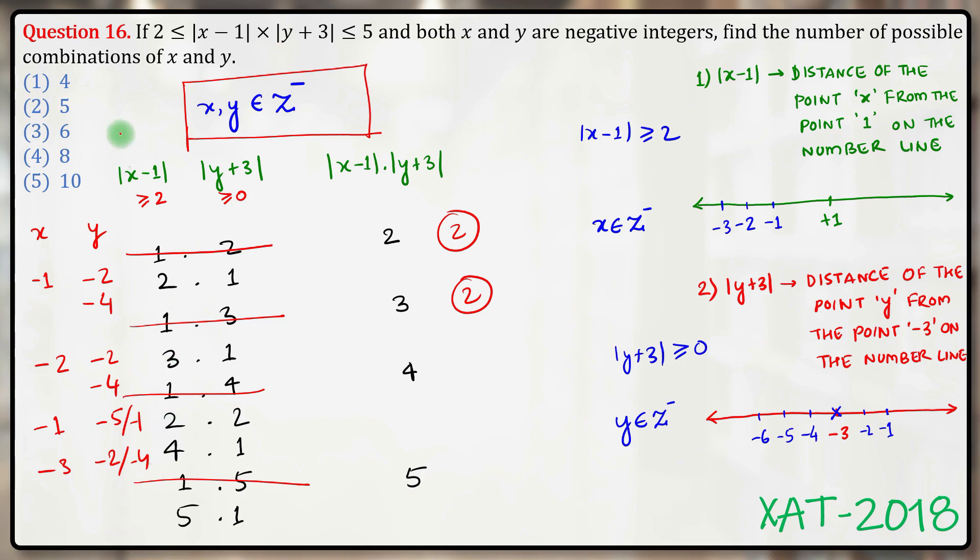Again for mod of x minus 1 to be 5, x must be minus 4. For mod of y plus 3 to be 1, y must be either minus 2 or minus 4. So here we got four cases and here we got another two cases. That's a total of 10 different cases, which is anyhow the highest possible value among the answer options and also the correct answer option.